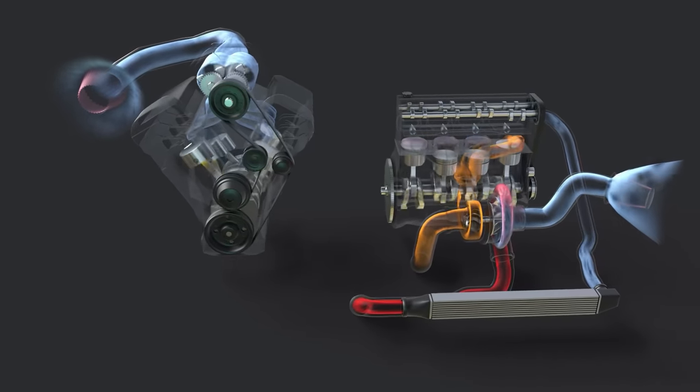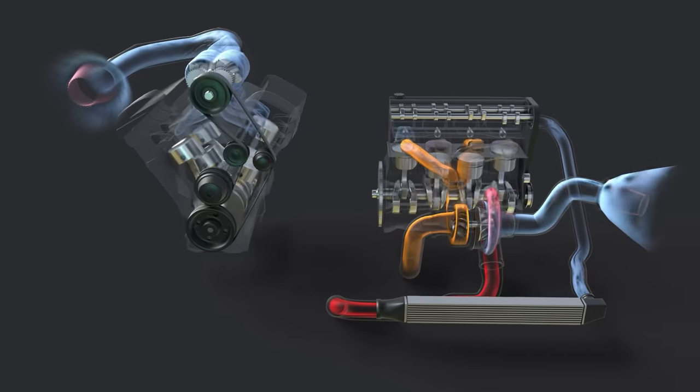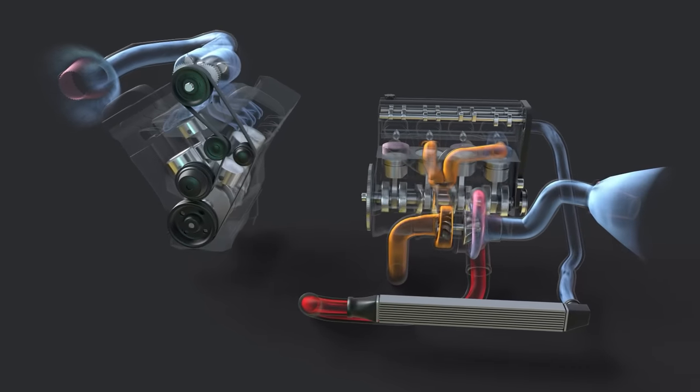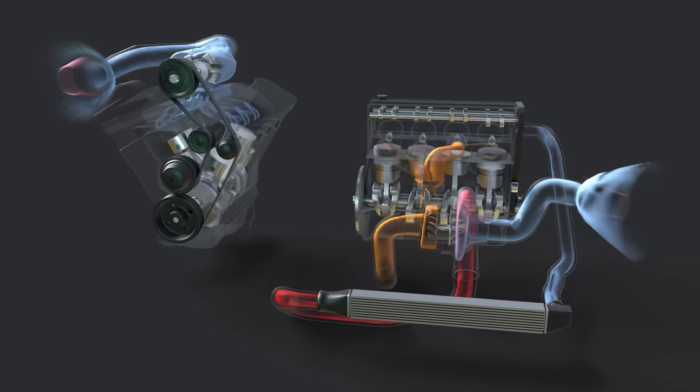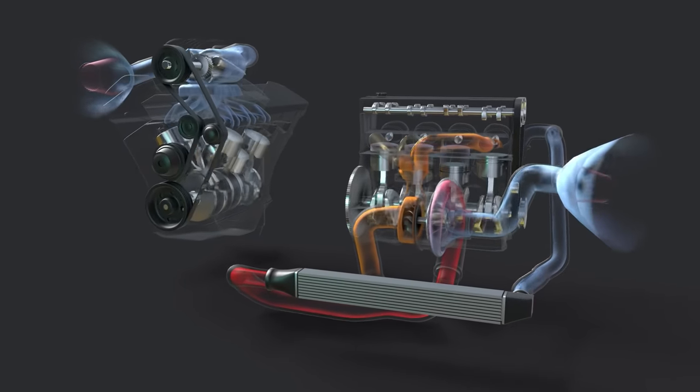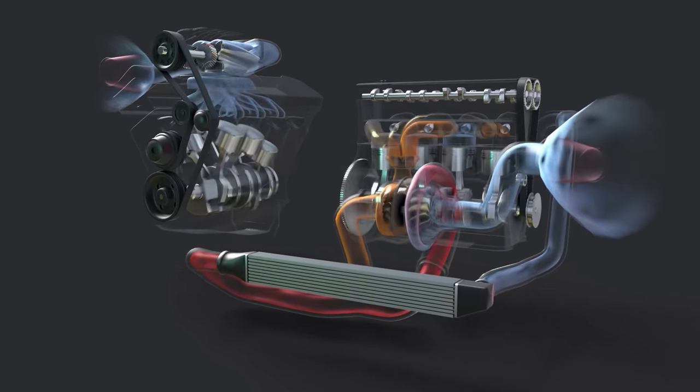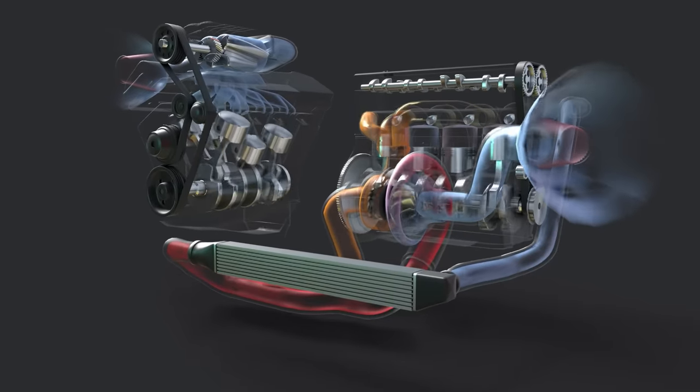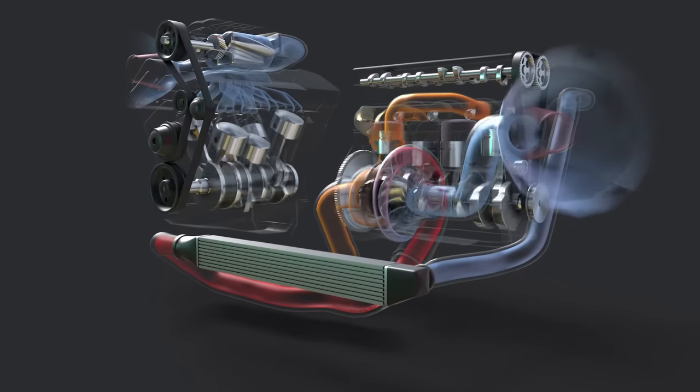Turbos might require more peripheral parts, like oil and vacuum lines, an intercooler, custom exhaust manifolds and exhaust piping, and so on. Turbos can require more skill to properly configure. However, a well-tuned turbo system may be able to produce boost more efficiently and in greater quantity than a supercharger.